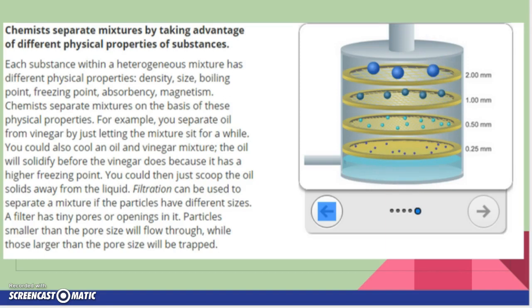Each substance within a heterogeneous mixture has different physical properties. Different density, different size, different boiling point, different freezing point, different absorbency. Maybe it's magnetic. Chemists separate mixtures on the basis of these physical properties.